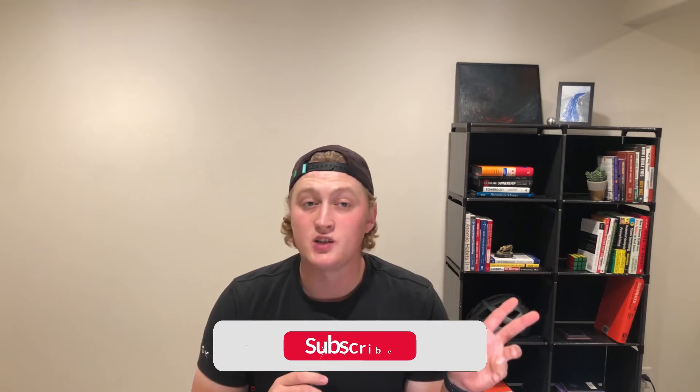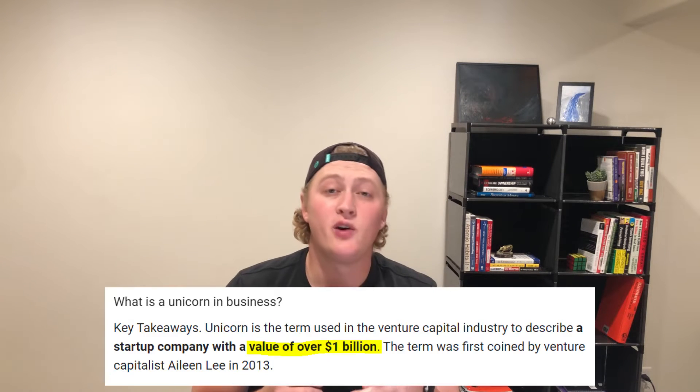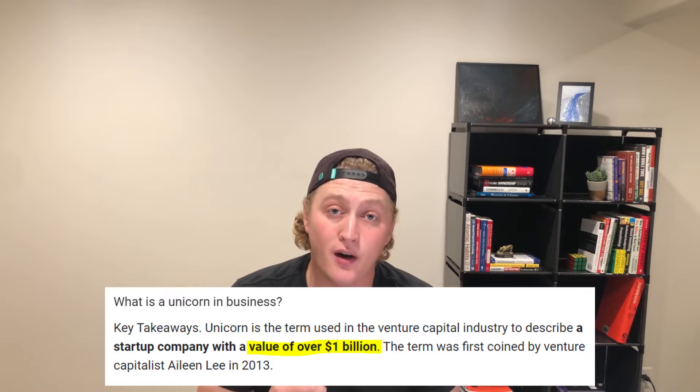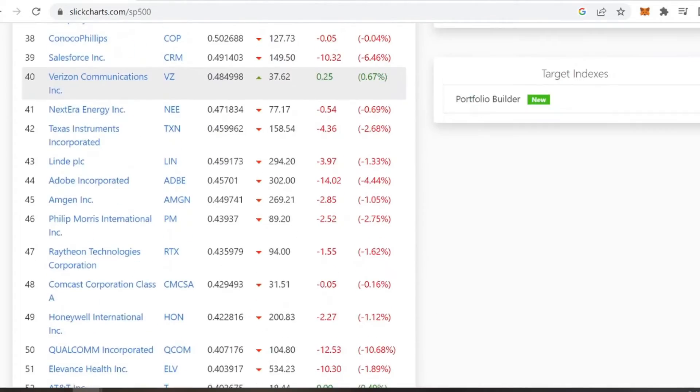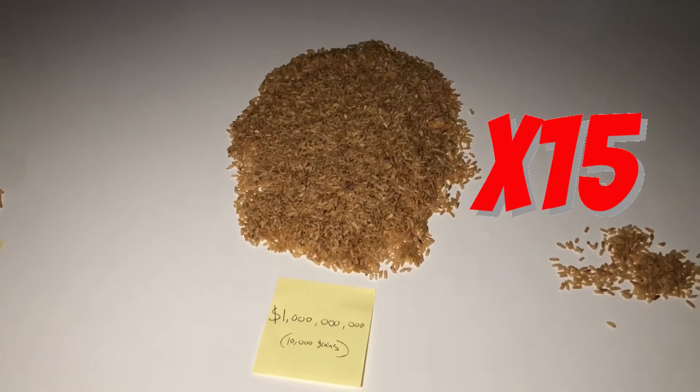I've got some crazy stats and information regarding billions. In the business world, there are things referred to as unicorns — private businesses worth over $1 billion — and there are thousands of them. If you look at the S&P 500, every single one of those companies is worth over $1 billion. Even at the bottom of the list is Fox, worth $15.13 billion. So if you take 10,000 grains of rice and add another 15 piles of 10,000 grains, that's the valuation of one of the smallest companies in the S&P 500.